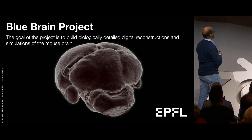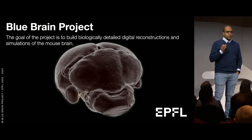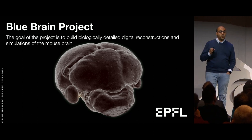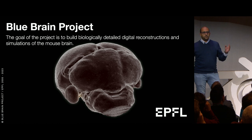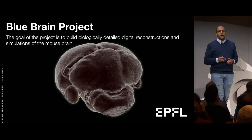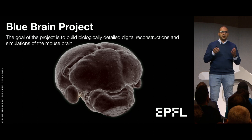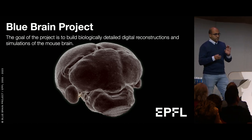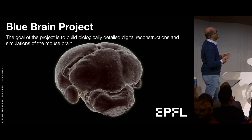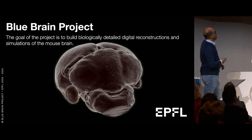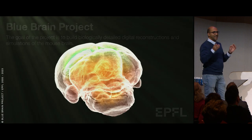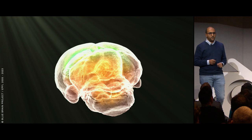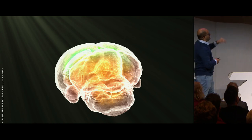The BlueBrain project is a Swiss project that aims to digitally reconstruct 3D models of the brain and then integrate these models together to perform a simulation of the mouse brain. That's an example of a three-dimensional model of the rat brain, and what we want to do is get deeper into it and understand every tiny little aspect of it.